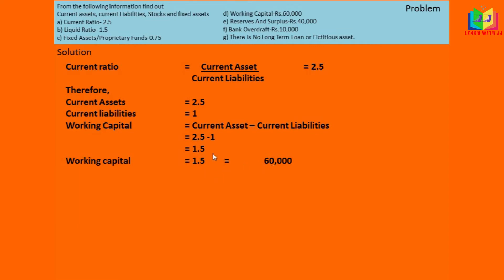We can easily find out the value of the 2.5 proportion and the 1 proportion. First we find 2.5 by cross multiplication: 60,000 multiplied by 2.5, divided by 1.5 — we get 1 lakh. This is the value of current assets.